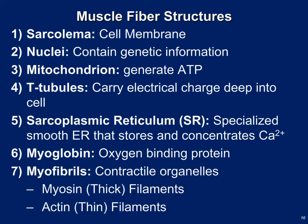This slide contains important vocabulary related to muscle physiology. The sarcolemma is the cell membrane of a muscle cell. Skeletal muscle cells contain lots of nuclei and lots of mitochondria because they use a lot of energy and need to generate ATP. T-tubules carry electrical charges from the cell surface deep into the cell to signal contraction. The sarcoplasmic reticulum stores calcium and releases it when contraction is needed. Myoglobin is a red pigment in muscle tissue — similar to hemoglobin in red blood cells — that binds and carries oxygen.